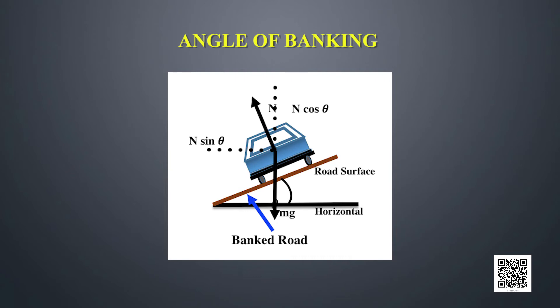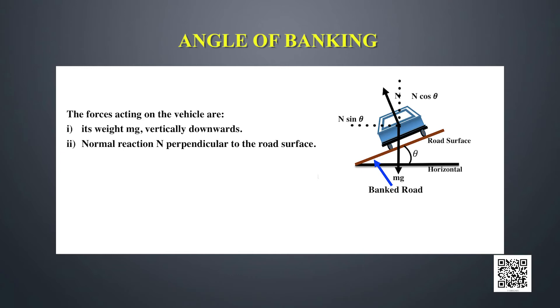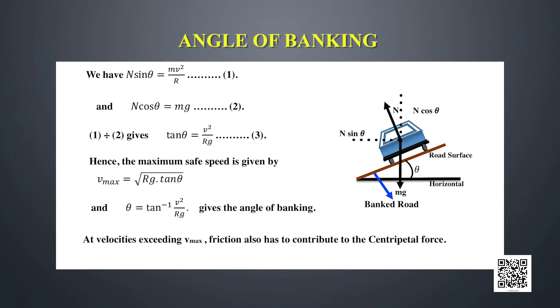Here we have a diagram of a car on a banked road, and we will calculate the angle of banking while totally eliminating the force of friction. The forces acting on the vehicle are its weight mg vertically downwards and normal reaction N perpendicular to the road surface. The vertical component N·cosθ balances the weight of the car, and the horizontal component N·sinθ provides the necessary centripetal force. So: N·sinθ = mv² / r and N·cosθ = mg.